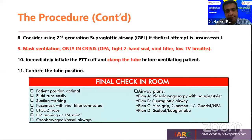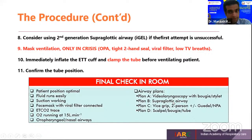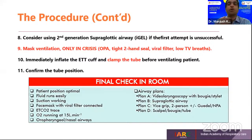The airway plan checklist from Mayo Clinic: Plan A is video laryngoscopy with a bougie; Plan B is supraglottic airway; Plan C is wire strip and conventional laryngoscopy; Plan D — if failing — is cricothyroidotomy.